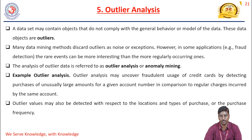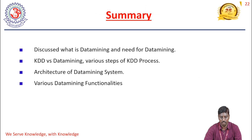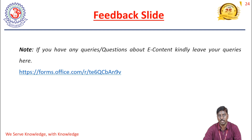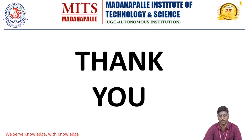In summary, we discussed what data mining is and why it is needed, the difference between KDD and data mining, and the various steps involved. The five important data mining functionalities covered are: characterization and discrimination, association analysis, classification and regression, cluster analysis, and outlier analysis. References are from the book 'Data Mining: Concepts and Techniques' by Han, Kamber, and Pei. Thank you, and your feedback is most welcome.